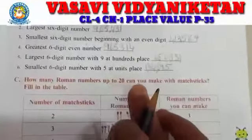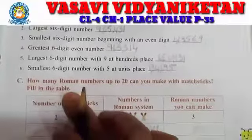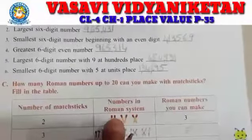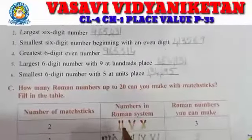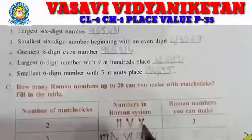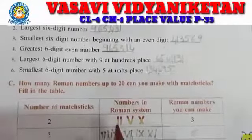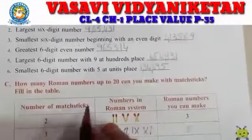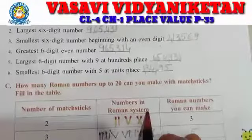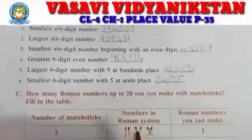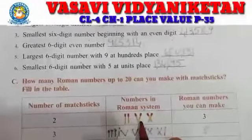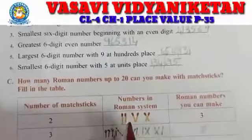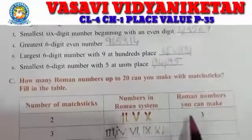How many Roman numbers up to 20 can you make with matchsticks? We fill in the table: Roman numbers and number of matchsticks. With 2 matchsticks, you can form Roman numbers — 2 is II, 5 is V, 10 is X. So with 2 matchsticks, you can make 3 Roman numbers.